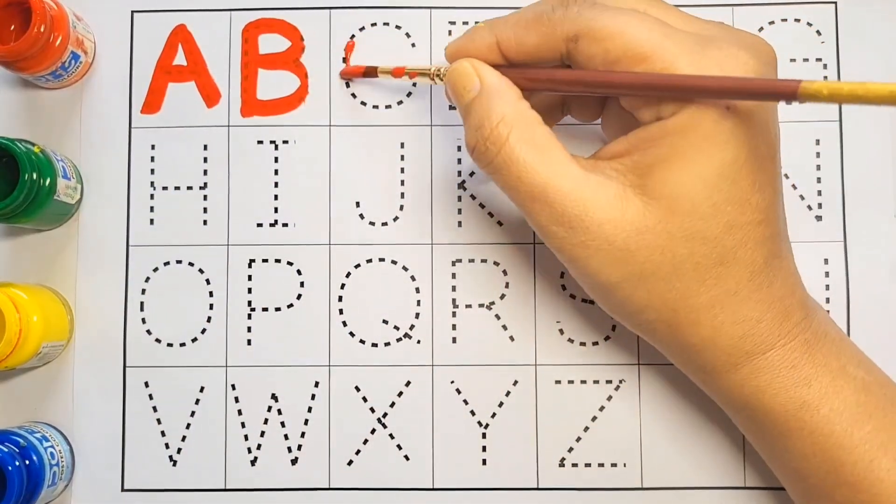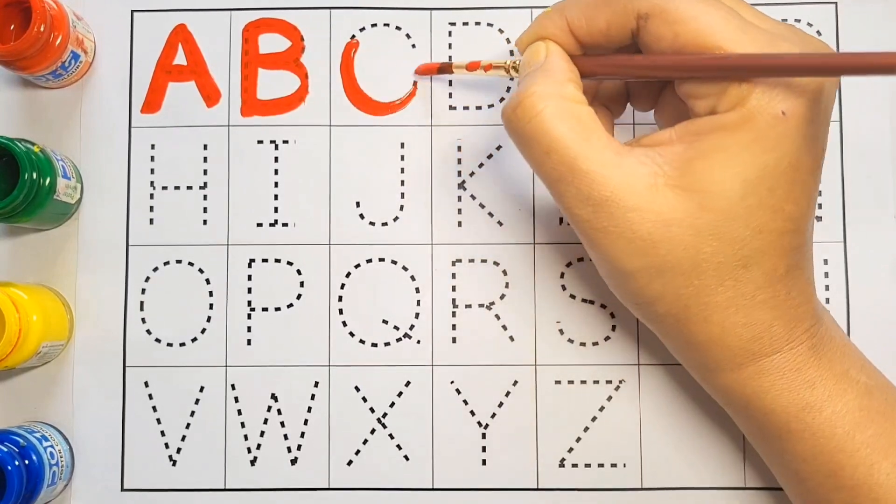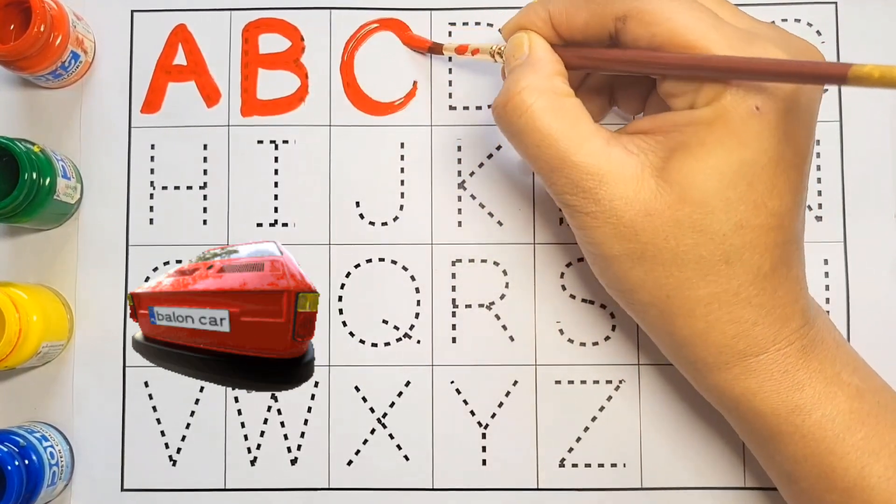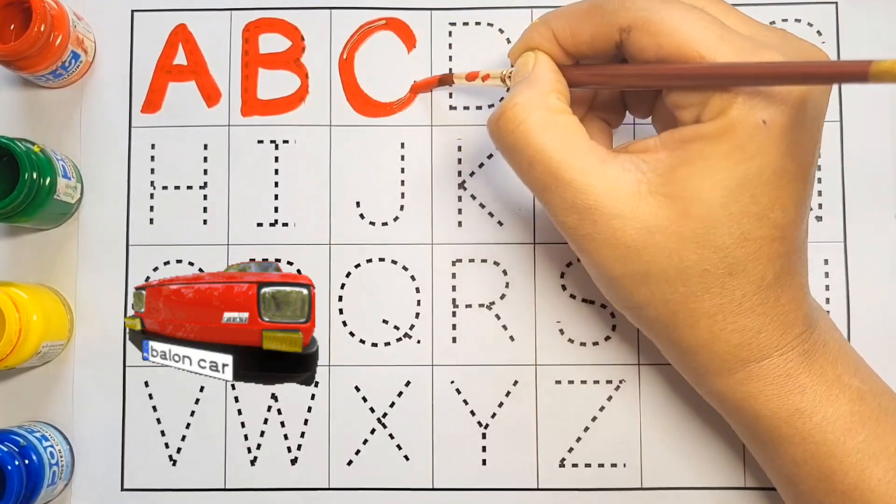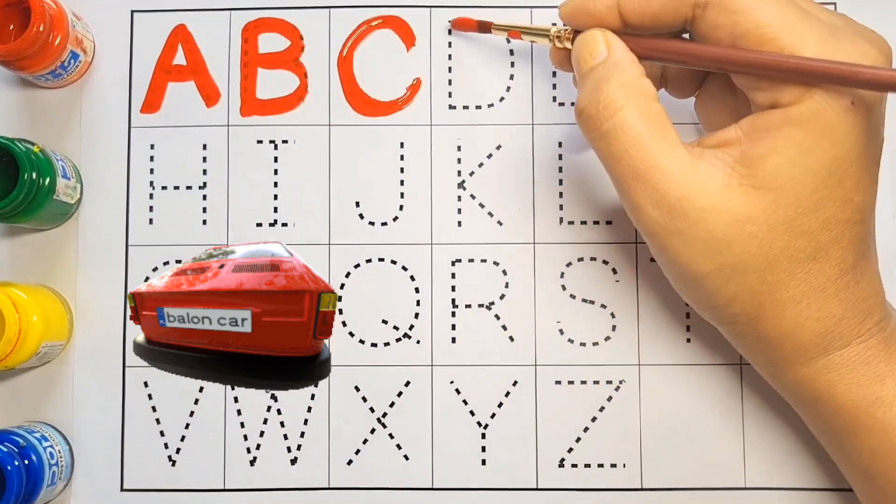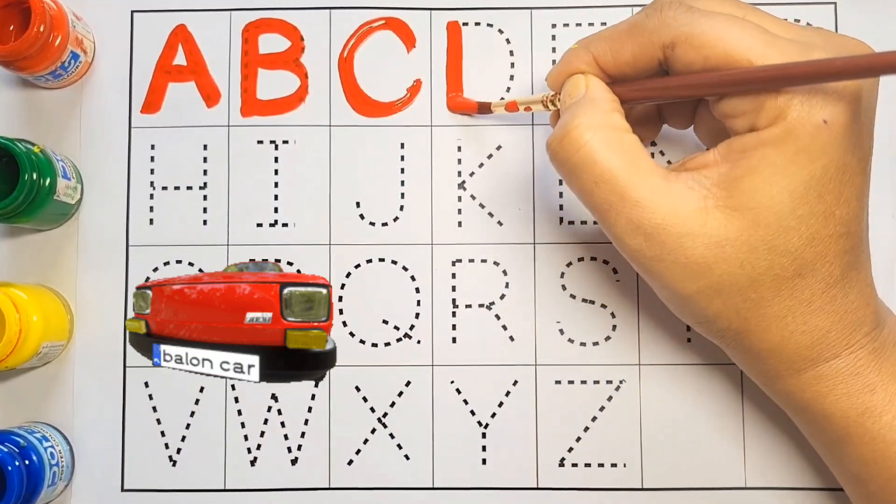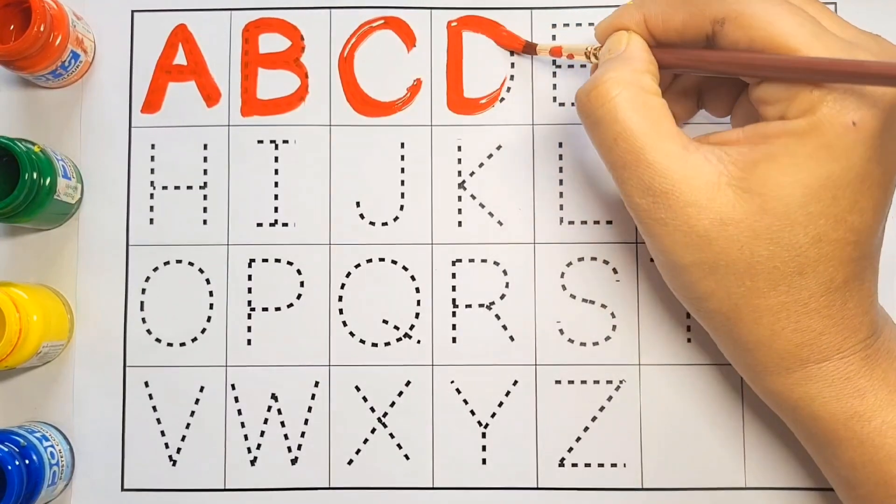C, C, C for car. Kids, you have D, D for donuts.